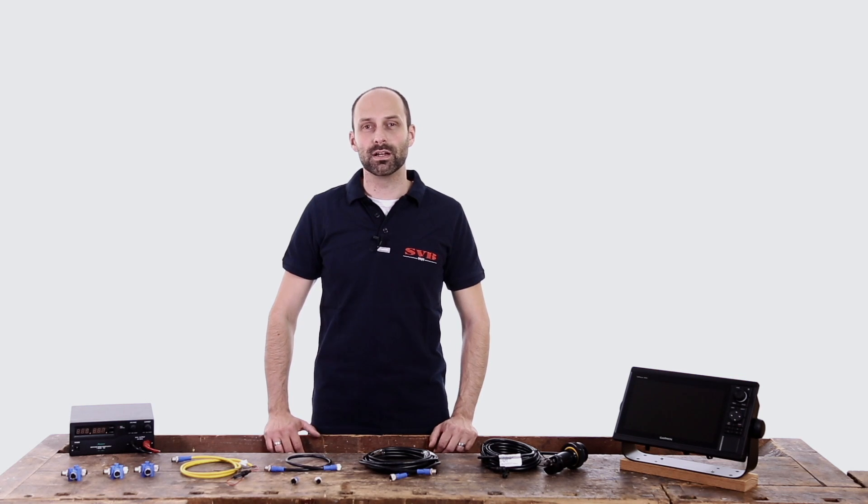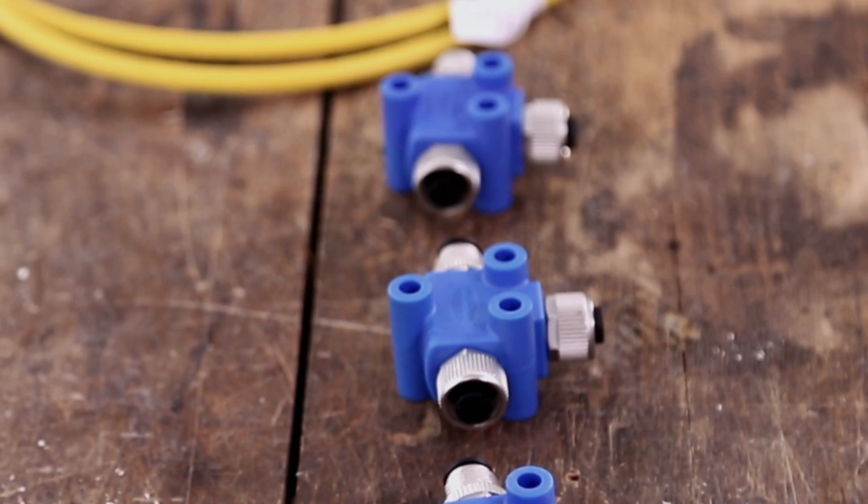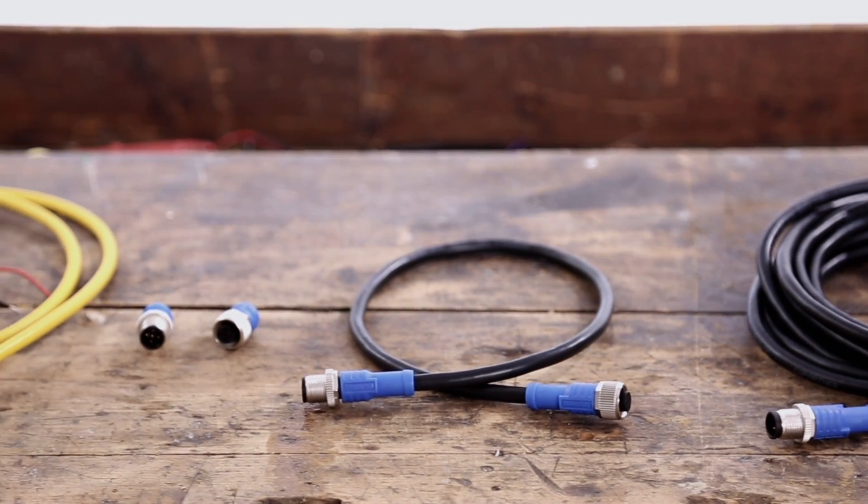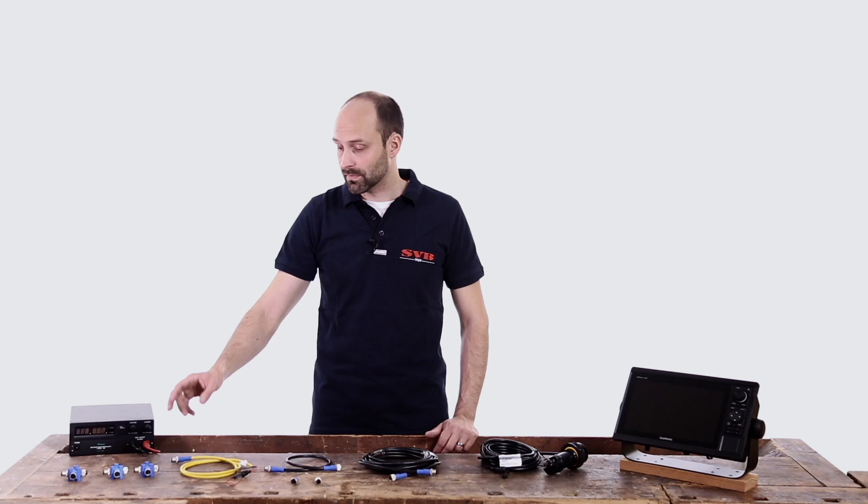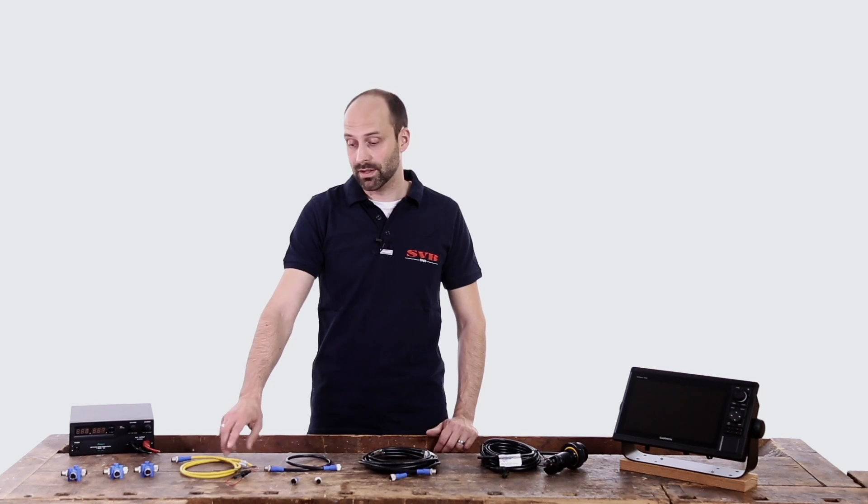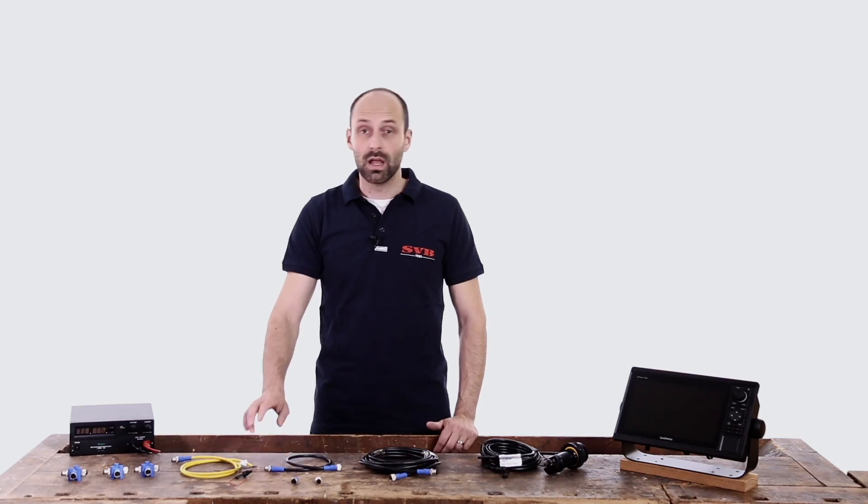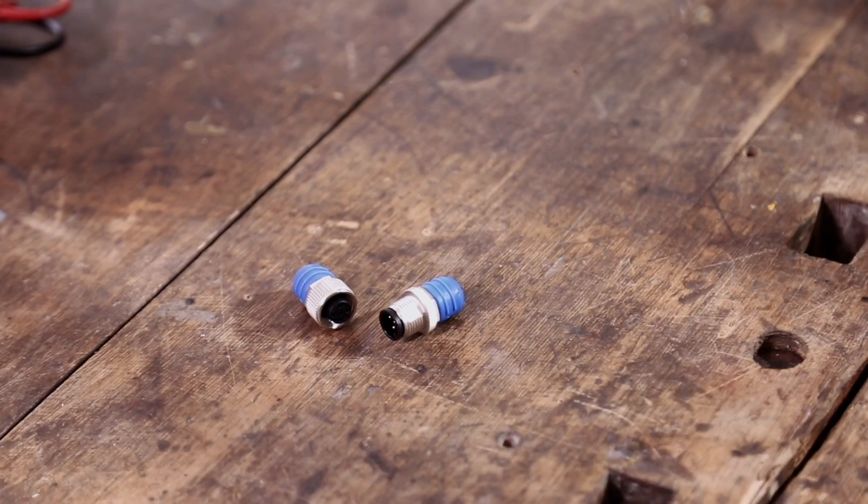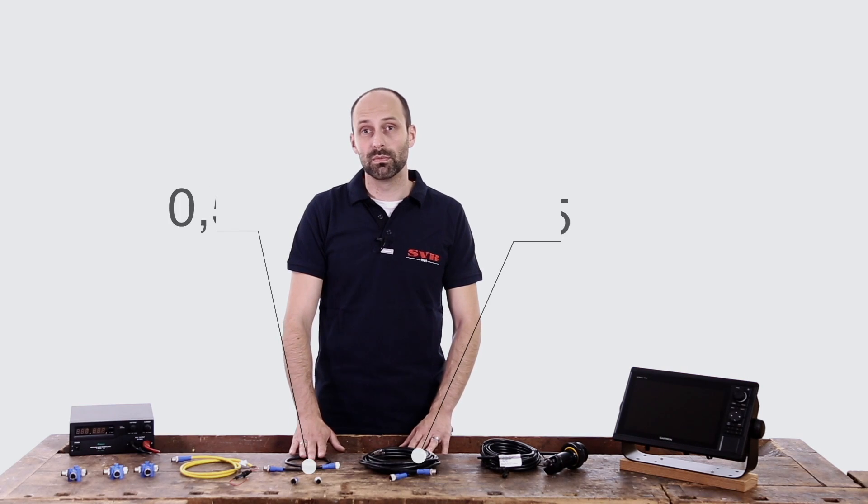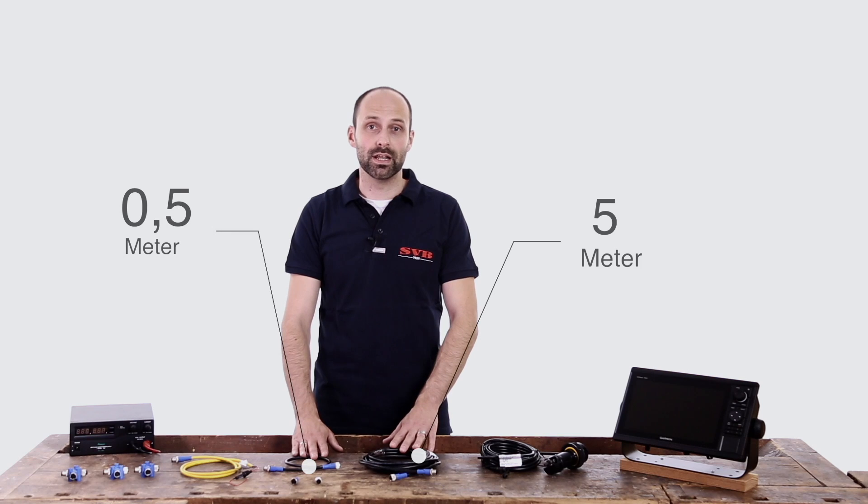In our SVB NMEA 2000 starter kit are all the components needed to connect two NMEA 2000 products. In detail it consists of three NMEA 2000 micro CT pieces, one NMEA 2000 power cable including a 3 amp fuse, two terminating resistors used to close the network and two network cables, one with a length of 0.5 meters and the other 5 meters.